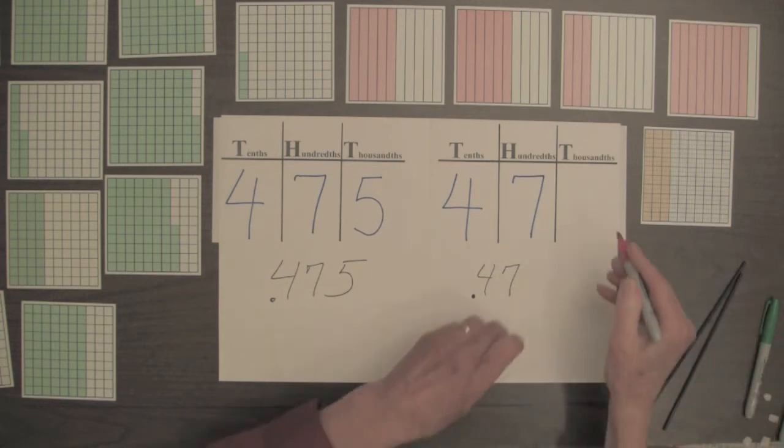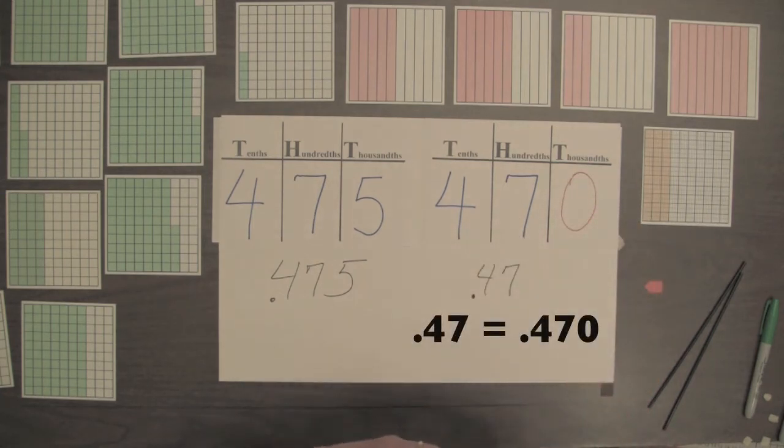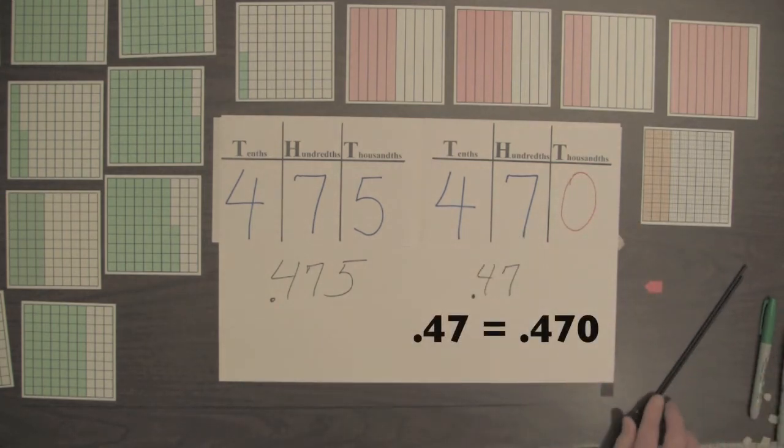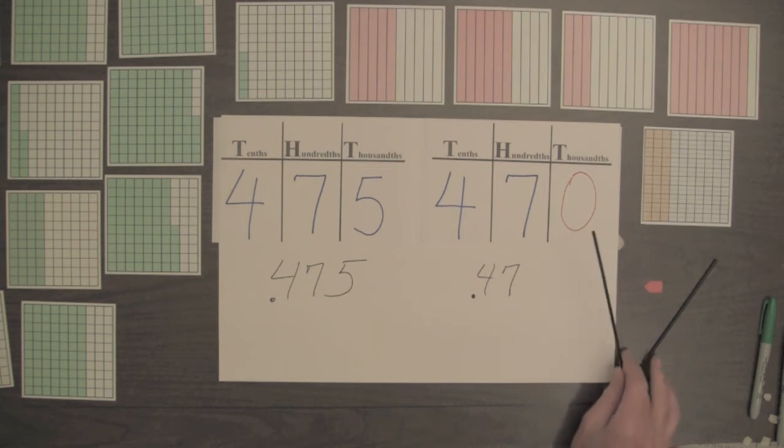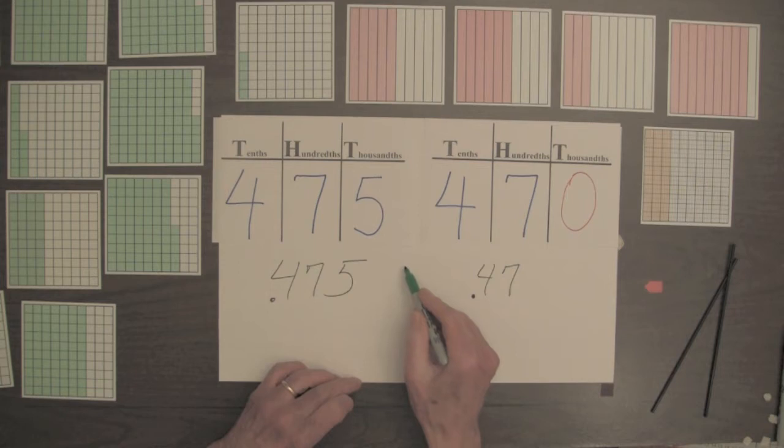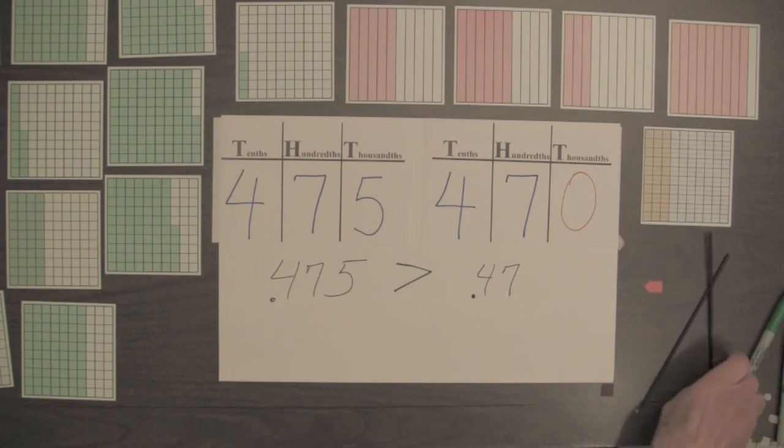And there are no thousandths for the decimal forty-seven hundredths. So we can put a zero in this column. And now we can see that four hundred and seventy-five parts out of a thousand are greater than four hundred and seventy parts out of a thousand. So this is the greater decimal. We can put in our inequality sign, and four hundred and seventy-five thousandths is greater than forty-seven hundredths.